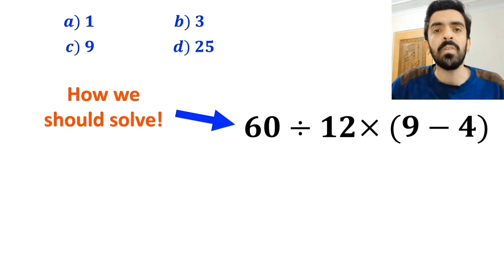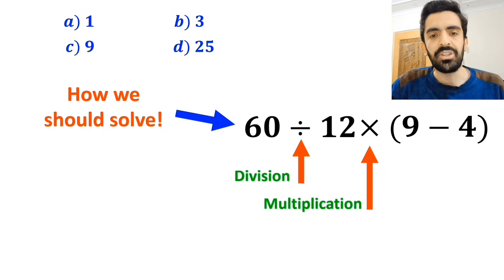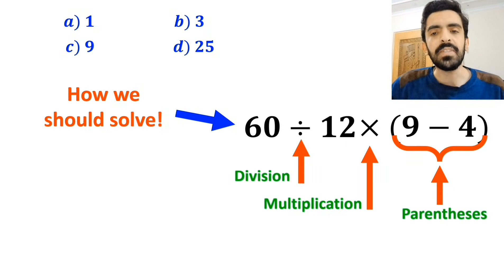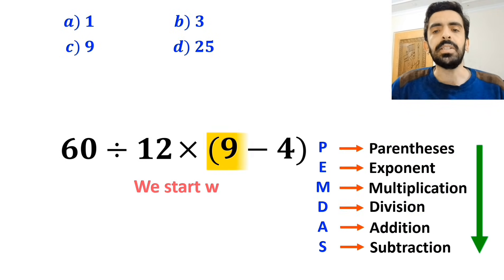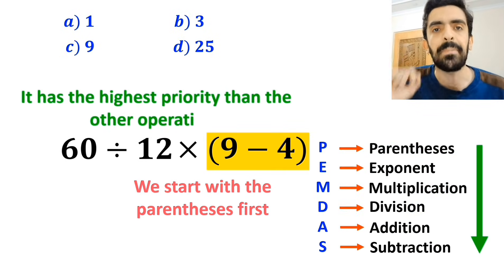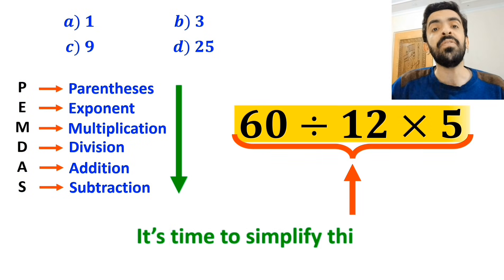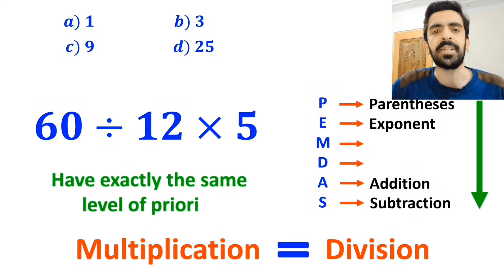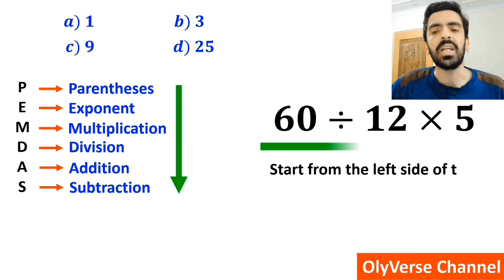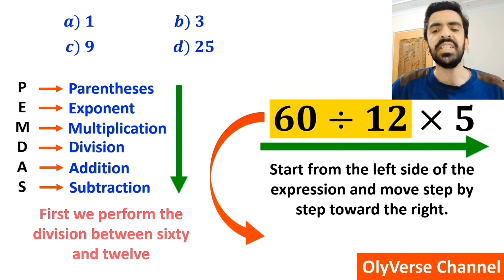Now let me explain how to solve this expression properly. As you can see on the screen, in this expression, first we have a division sign, followed by a multiplication sign, and finally parentheses. To solve this question, we need to use the PEMDAS rule, which shows us the priority of the order of operations. So we solve the parentheses first, because it has the highest priority. This simplifies to 60 divided by 12 times 5. It's very important to note that multiplication and division have exactly the same level of priority in PEMDAS. So we start from the left side and move step by step toward the right, performing the division between 60 and 12 first, which simplifies to 5 multiplied by 5, giving a final value of 25.